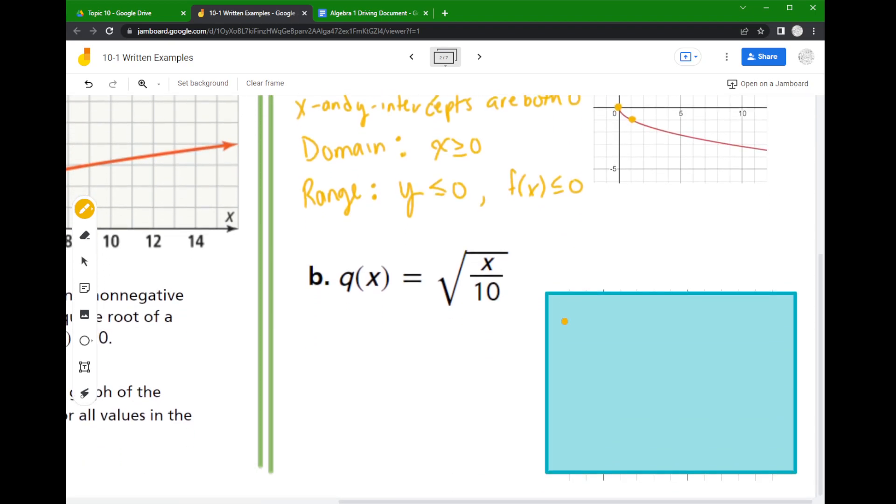Let's take a look at this last one, this is part B. This division of 10, I want to talk about that. So notice how that divided by 10 is inside of the square root. It's inside the radical. So that means that it's a horizontal change.